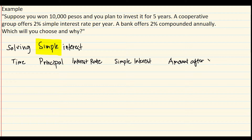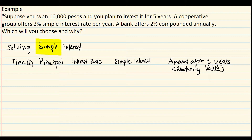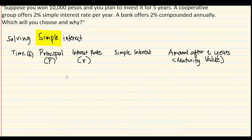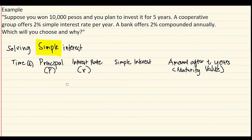We label time as 't years' and the final column as the amount after — also called the maturity value. The principal is represented by big letter P, and the interest rate is small letter r.